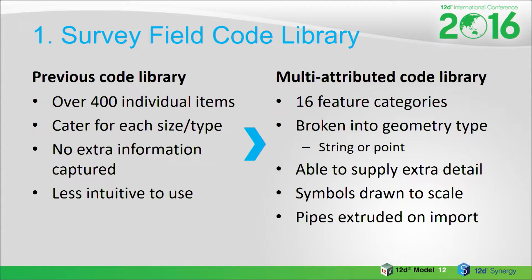One of the things that the survey department does is provide all the feature surveys, the service locations and asset exposures for our capital delivery team. To do this, we have a feature code library of over 400 individual feature codes. The reason why it's so large is because we need to make sure that we have a code for each instance of diameter that we may be capturing or valve type.